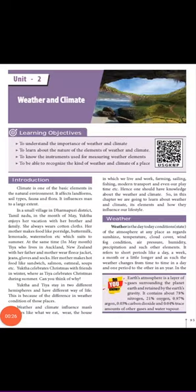Unit 2 is nothing but weather and climate. We all know well about what is weather and what is climate — we have been learning this from lower classes. What we are going to learn in this unit includes: the importance of weather and climate, the nature of the elements of weather and climate, the instruments used to measure those elements, and how to recognize the kind of weather and climate of a place.